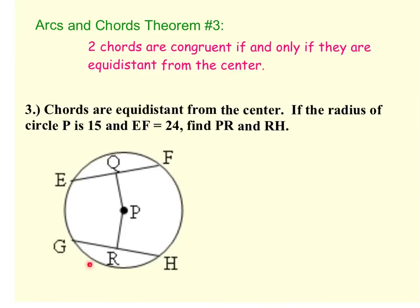Look down at this picture, you have this picture under number three on your note sheet. What this theorem says is that, for example, in this picture, EF would have to be congruent to GH as long as the distance from the chord to the center, so PQ and PR are congruent. So if this is the same distance as this, then these chords have to be congruent. That's arcs and chords theorem number three.